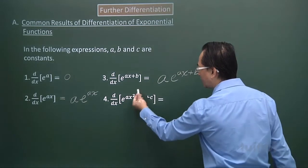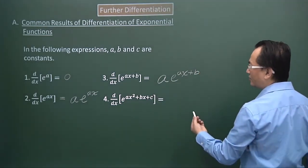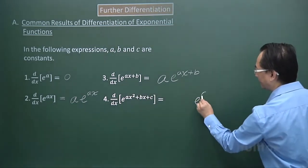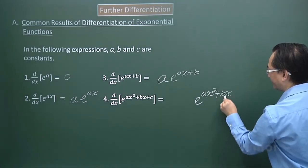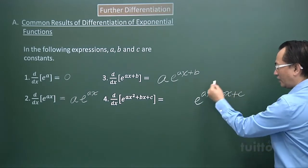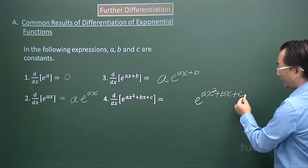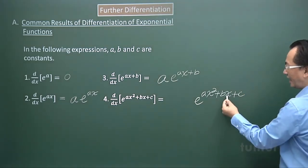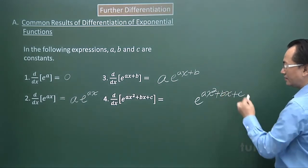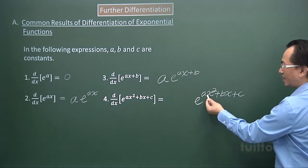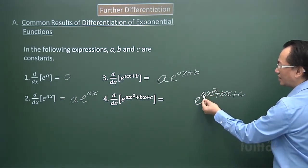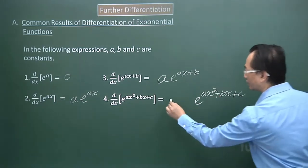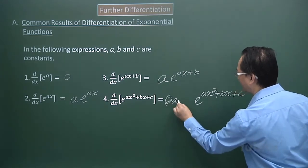Next, if the expression is a quadratic one, I still do what I normally do with the exponential function — that is, copy that. When I look at the expression of the index, which is a quadratic expression, the constant term becomes zero when I differentiate that. For the x term I consider the coefficient. For the x squared term, the index multiplies to the coefficient: I have 2A, then x, because I take one off the index. So this expression would be 2Ax plus B.